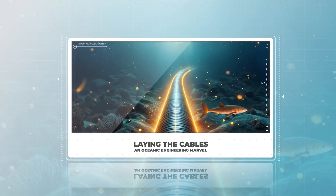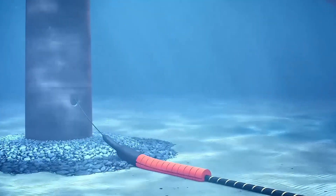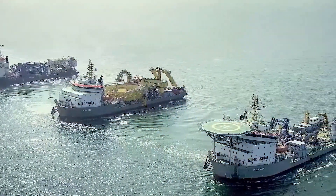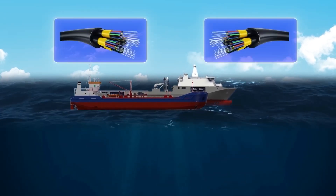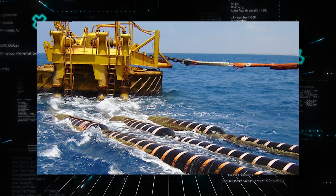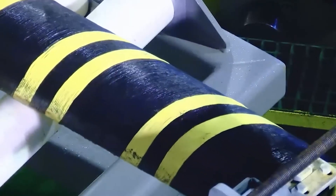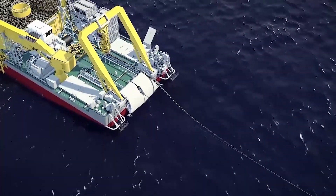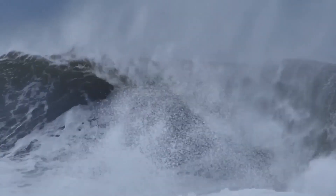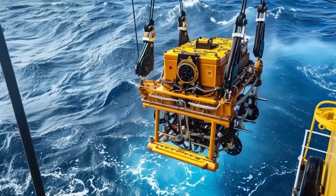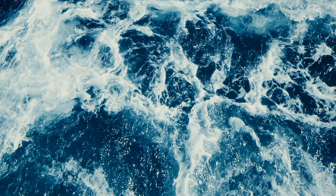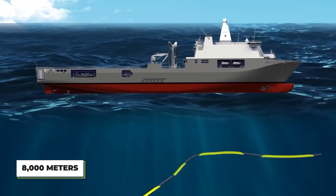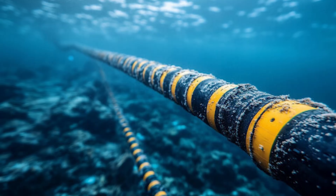Laying the cables: an oceanic engineering marvel. The process of laying submarine cables is a marvel of modern engineering. After the route has been carefully charted and mapped, the cable-laying ship gets to work. The wires are loaded onto the boat, which can carry thousands of kilometers of cable at a time. The cable-laying process must be precise — the ship moves slowly along the ocean, unspooling the cable as it goes. Specialized crew members monitor the process closely, ensuring that the cable is laid exactly where it's supposed to go. In areas where the ocean floor is rough or rocky, remotely operated vehicles (ROVs) may be deployed to help guide the cable, maneuvering it into position and ensuring it isn't damaged during installation. In shallow waters, the cables are buried several meters beneath the ocean floor to protect them from damage. However, in the deeper parts of the ocean — sometimes at depths of up to 8,000 meters — the cables are simply laid on the ocean bed, where they are less likely to be disturbed.